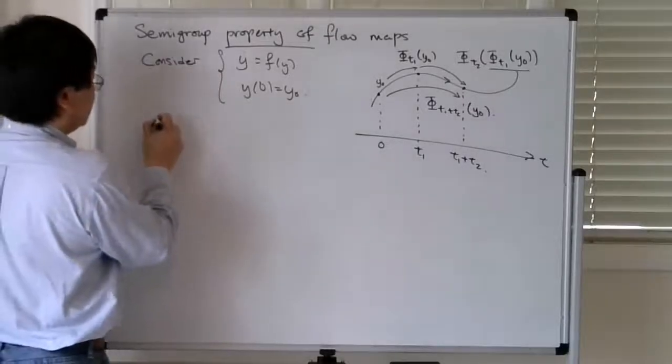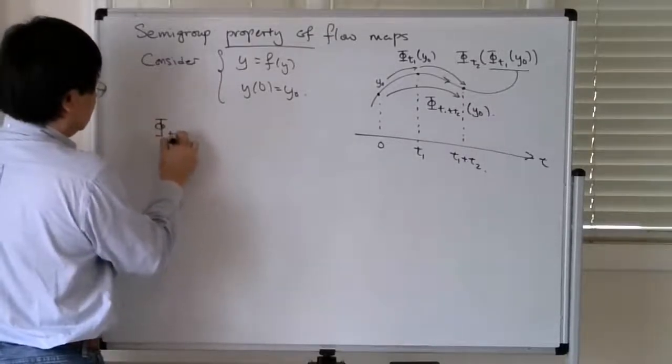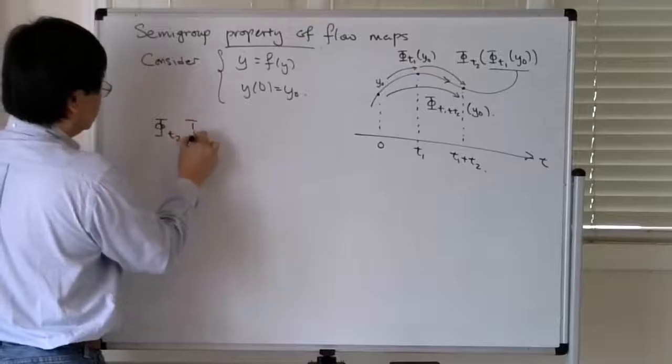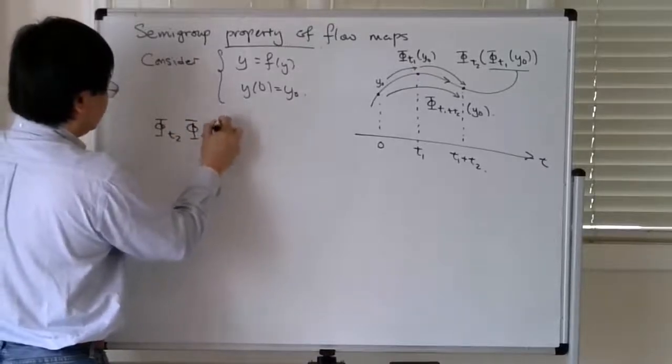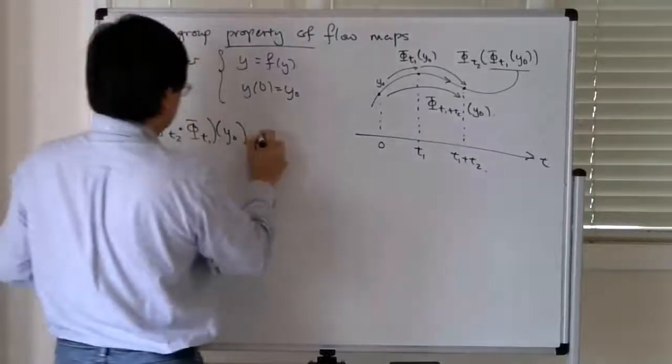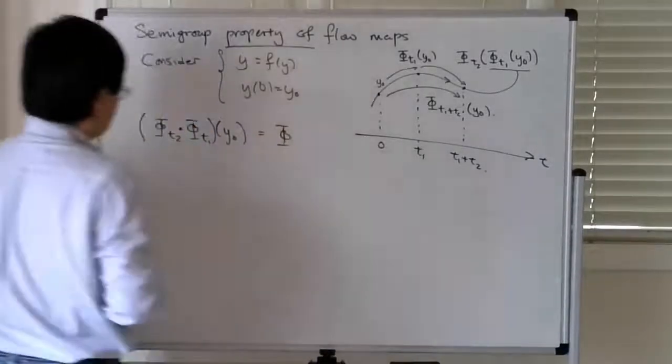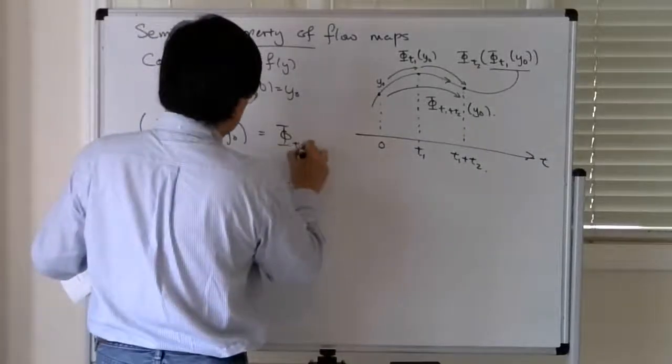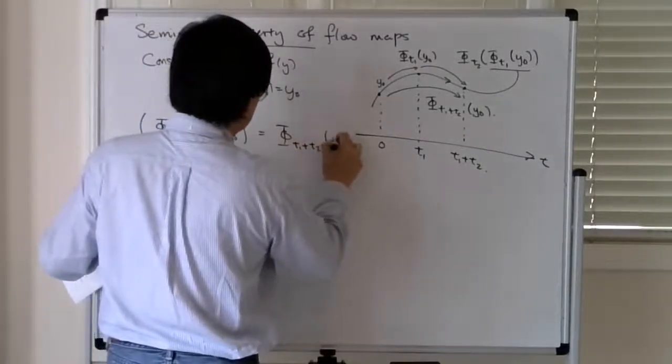So what this is saying is that the composition of these two flow maps applied to the initial data is equal to the flow map for t1 plus t2 applied to the initial data. And this should be true for all initial values y0, so that means that as operators you have the property...